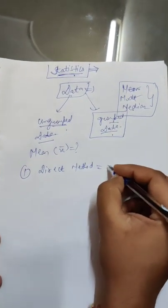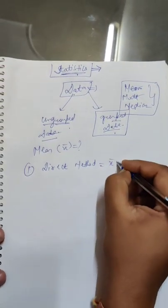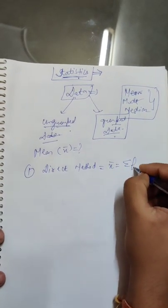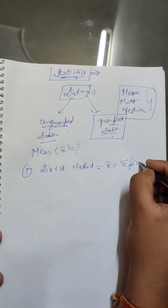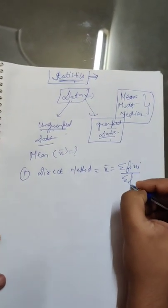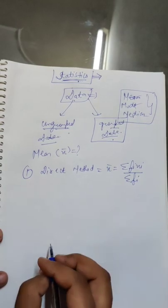The first method is the direct method. The formula is: x̄ = Σ(fᵢxᵢ) / Σfᵢ.